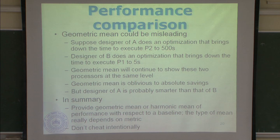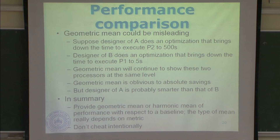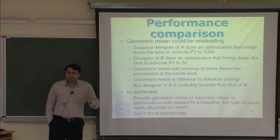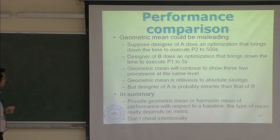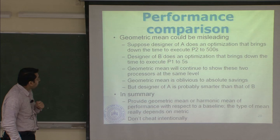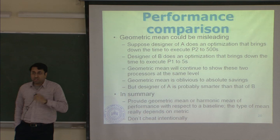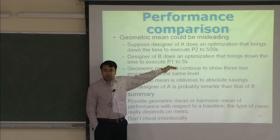Here is an example which shows how geometric mean can be calculated. Suppose designer of A does an optimization that brings down the time to execute P2 to 500 seconds — previously it was 1000 seconds. Designer of B does an optimization that brings down the time to execute P1 to 5 seconds — previously it was 10 seconds. Geometric mean will continue to show these two as equal, because the ratio is the same. What designer of B does is halve the execution time of P1.